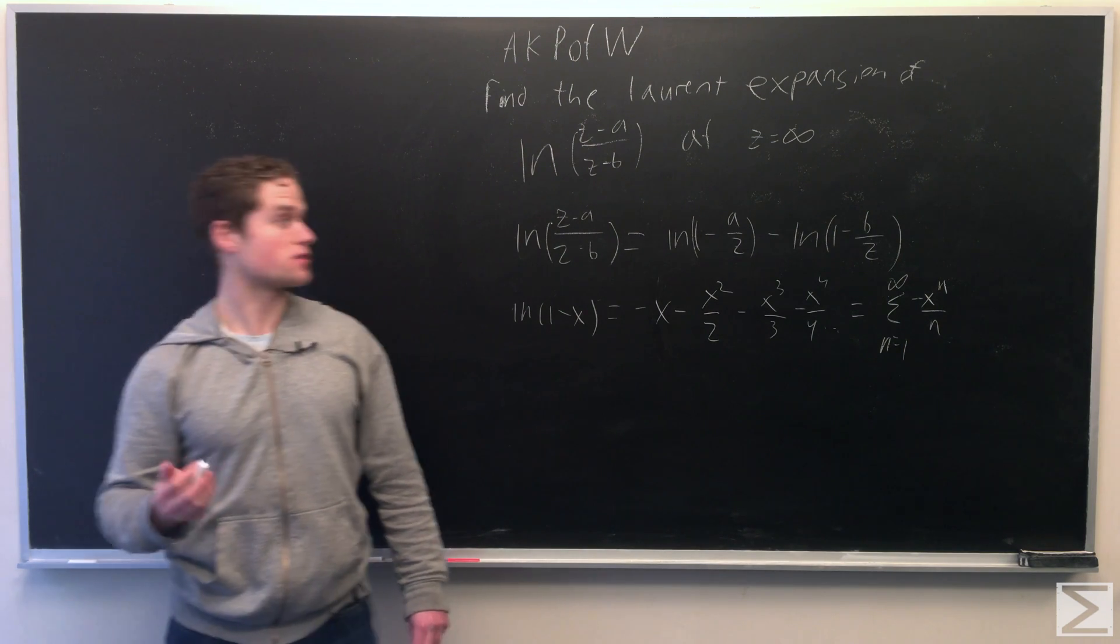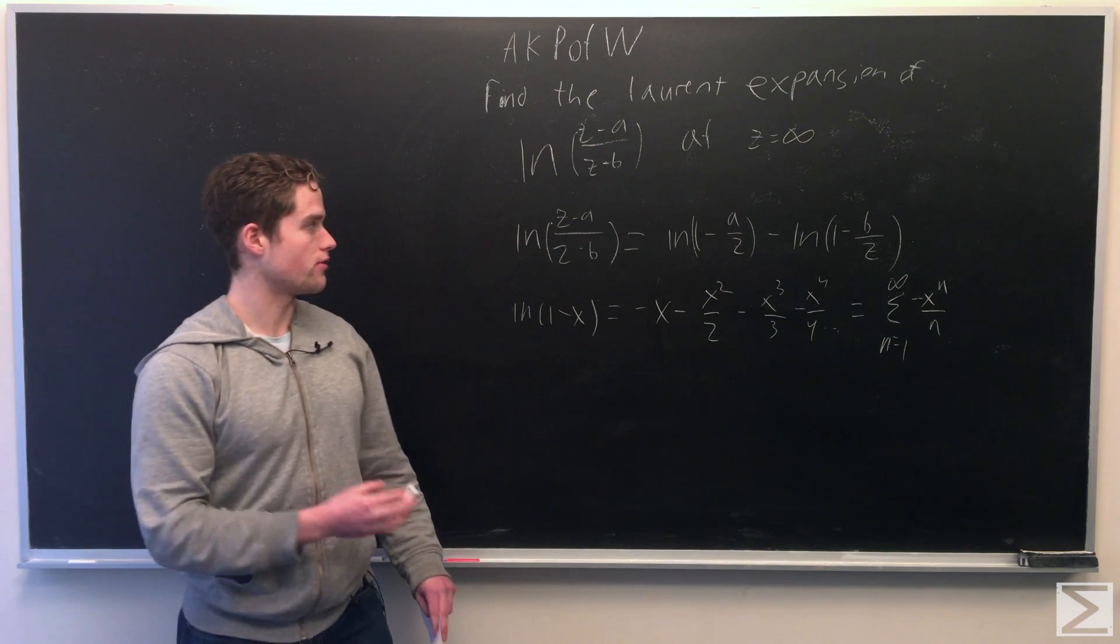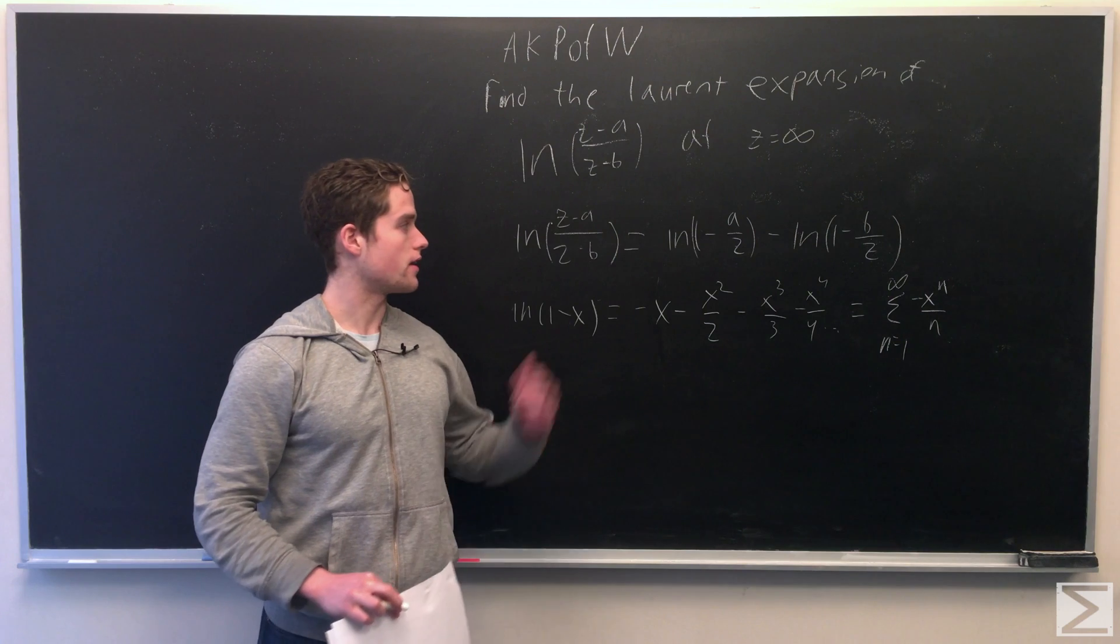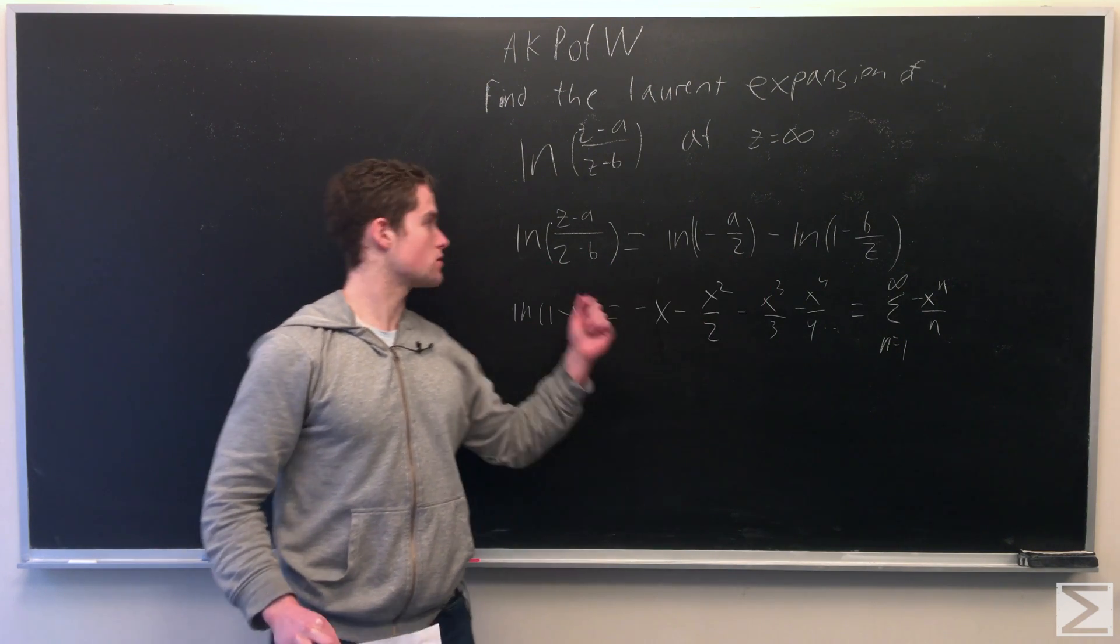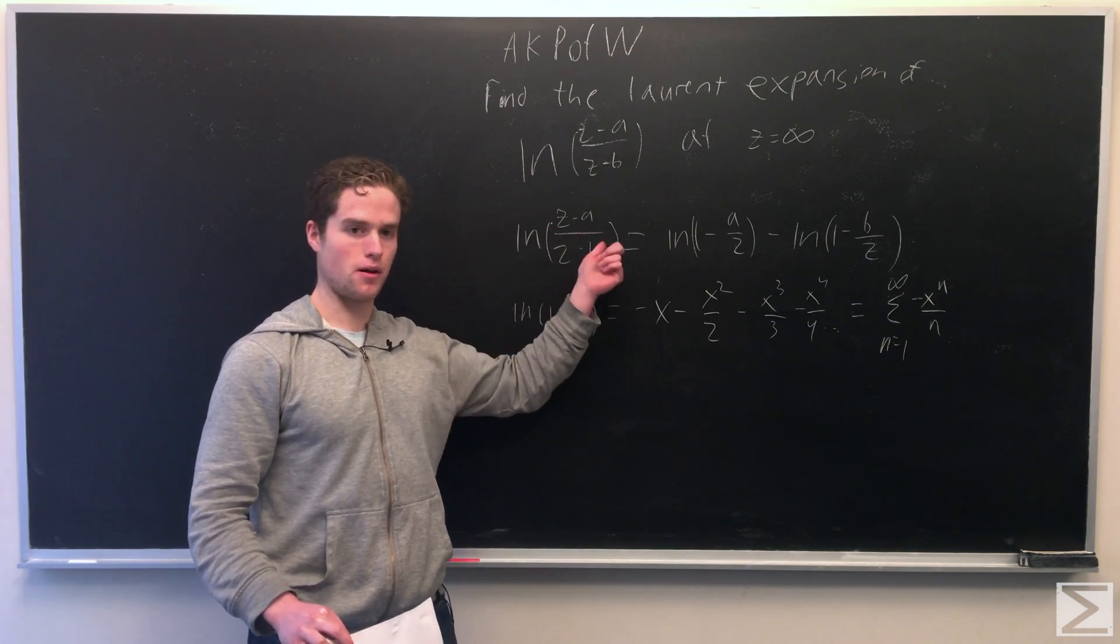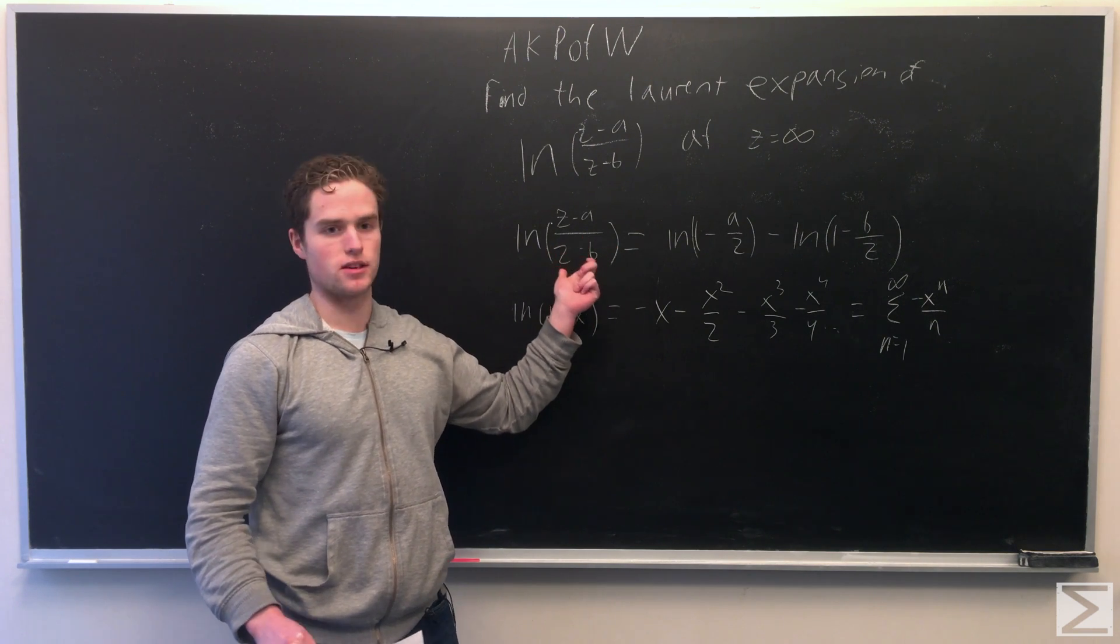So first, we're going to manipulate our expression a little bit. We're going to rewrite our initial natural log as two natural logs. And also note, we factored out z from top and bottom, assuming z is not equal to zero.